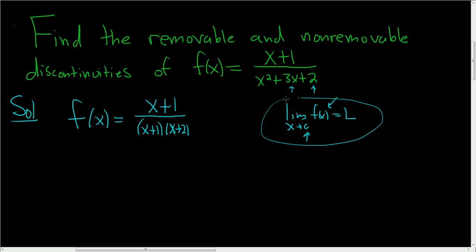However, in this problem, we don't have to worry about any of this. We have a rational function, and for rational functions, two things happen. If we have a vertical asymptote, it's non-removable. And if you have a hole in the rational function, it's removable.